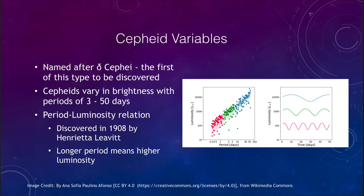Cepheids got their name from the first one discovered, which was Delta Cephei — the fourth brightest star in the constellation of Cepheus in the northern sky. They can vary in brightness with periods of between about three and 50 days, getting brighter and fainter as we saw on the previous slide.